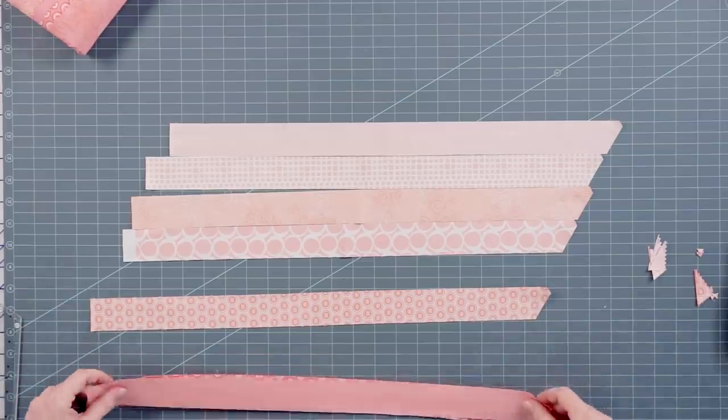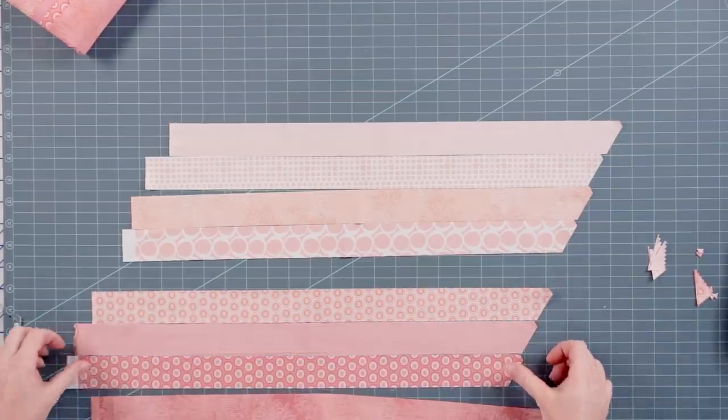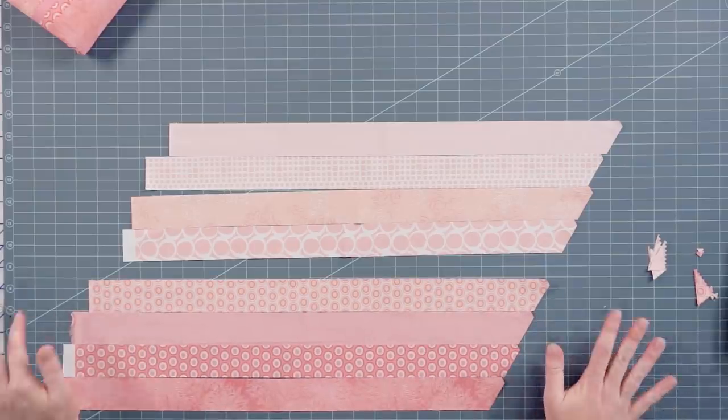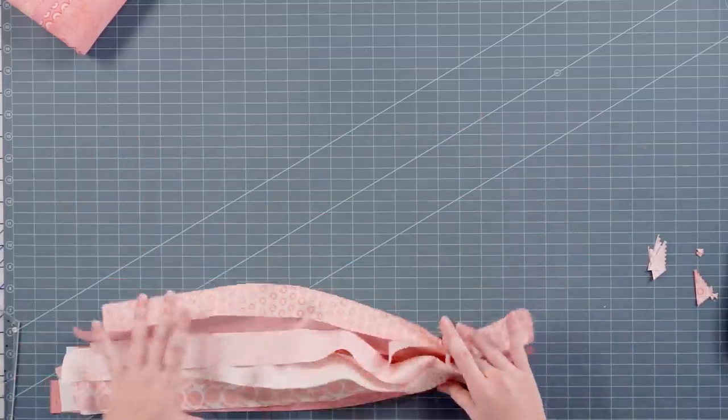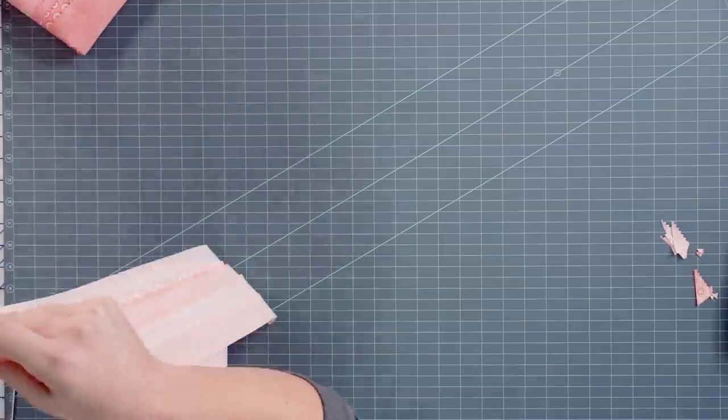And then the next step would be sewn like this. The slightly darker shades. Just like that. I've actually got some of those already sewn together. So I'll show you that now.